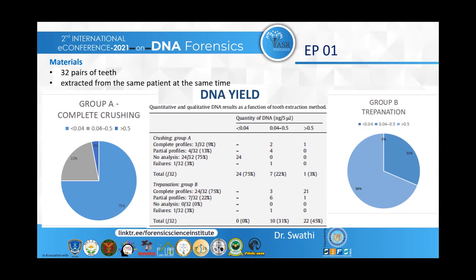In Group B, the endodontic approach, the quantity of DNA collected ranged from 0.04 to 9 nanograms. For 10 teeth where DNA ranged from 0.04 to 0.5 nanograms, the DNA was concentrated twice before use, yielding six partial profiles, three complete profiles, and one failure. For 22 teeth, the quantity of DNA exceeded 0.5 nanograms and complete profiles were obtained except for one sample that gave a partial profile. Among these 22 teeth, for 11 teeth the quantity ranged from 0.5 to 3 nanograms and DNA in its natural state was used. Statistical analysis showed that the quantity of DNA obtained was significantly higher with the conservative method — Group B, that is trepanation via endodontic access cavity and pulp removal.